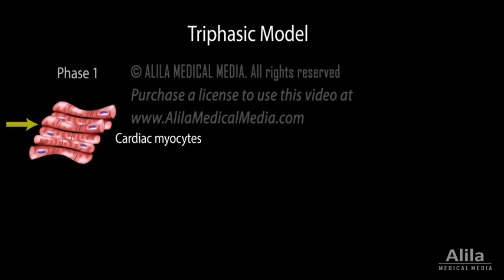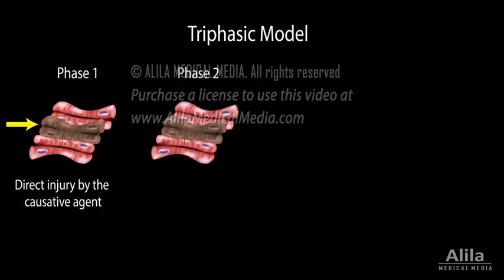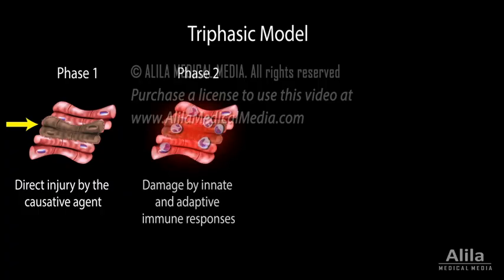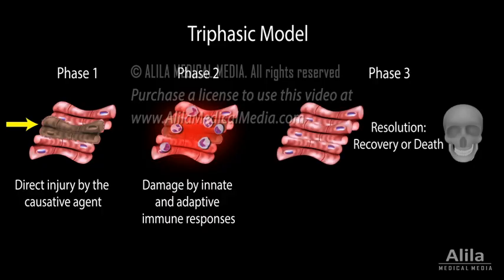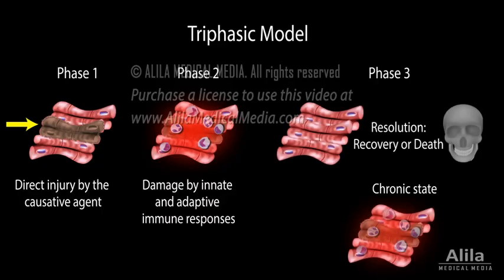Phase 1: direct injury by the causative agent. Phase 2: damage brought about by the innate and adaptive immune responses. And Phase 3: resolution of the disease or progression to a chronic state.